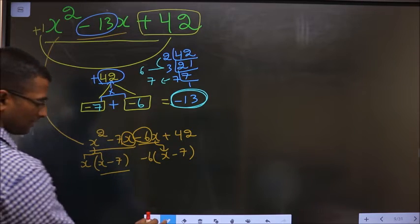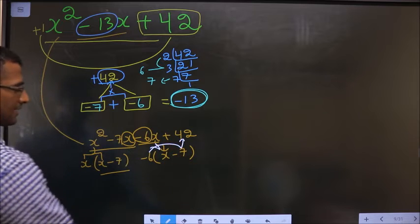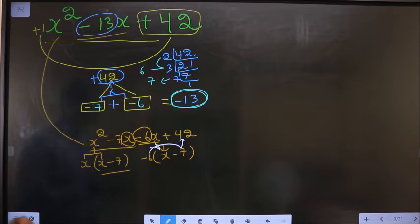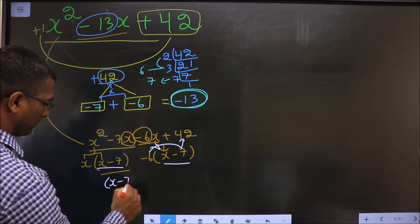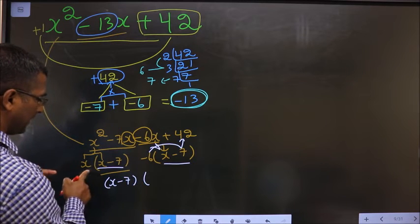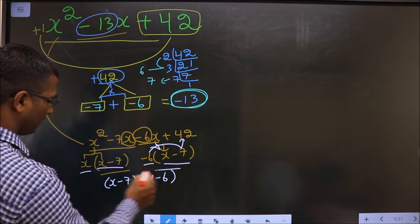Even if you multiply and see, still you get the same answer. Next take x - 7 common. So what do I get here? Left with x and here left with -6.